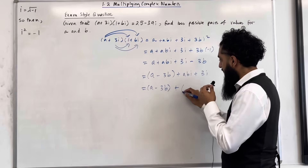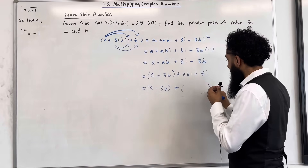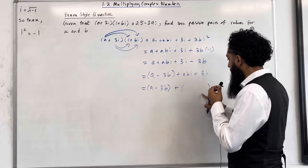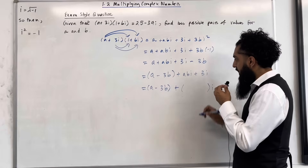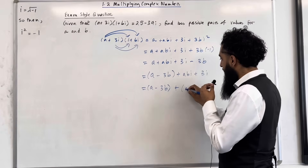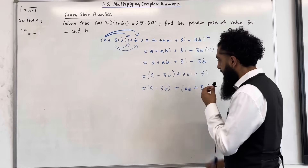So I can write, taking out the i, and inside the bracket I've got ab plus 3.